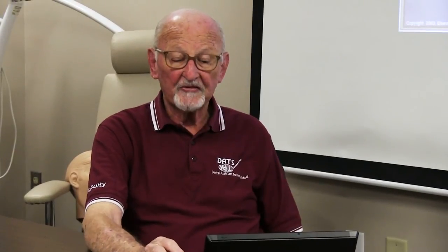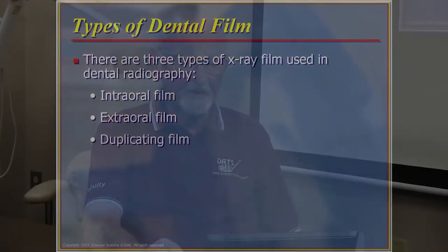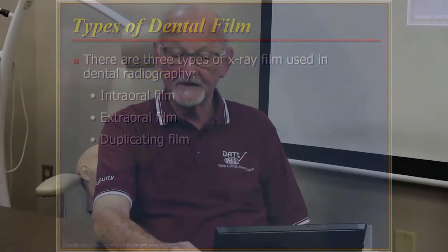There are three types of x-ray film used in dental radiography. The first is called intraoral film, the second is called extraoral film, and the third is called duplicating film. Each one is specifically different.